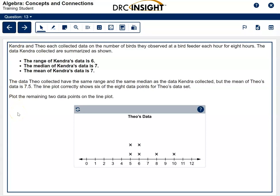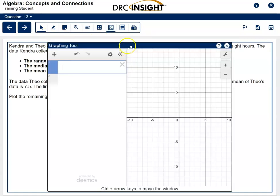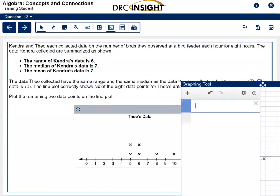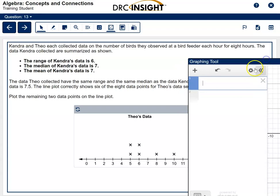The next item we're working is question number 13. Here we have Kendra and Theo. Kendra has a data set that we cannot see, but we do know the range of her set is 6, the median is 7, and the mean is 7. Theo collected data. His has the same range and the same median, but the mean is 7.5, and it shows 6 of his points. So we're supposed to plot 2 remaining data points. So what we're going to do is click on this graphing tool.